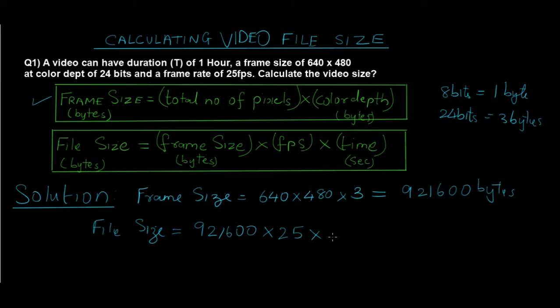One hour has 60 minutes and one minute has 60 seconds, so 60 into 60 is 3,600 seconds. If you multiply all these values you'll get a huge number which is going to be 82,944 into 10 raised to 6 bytes.